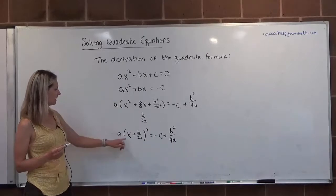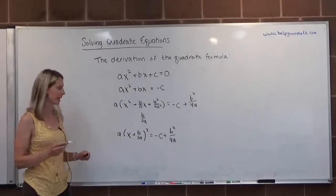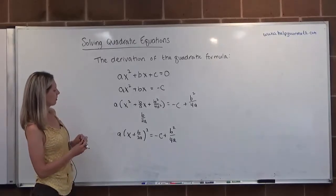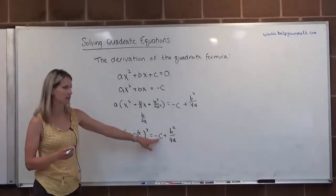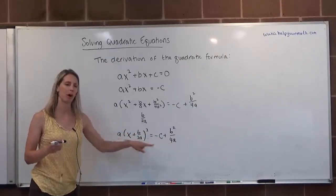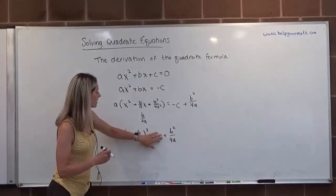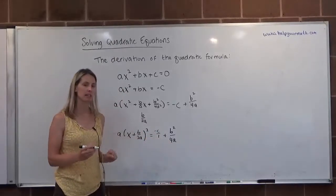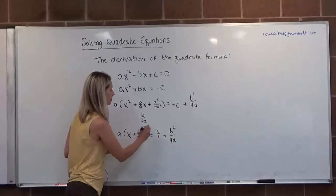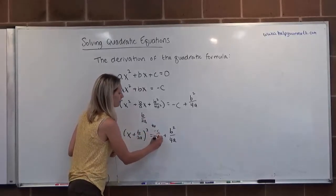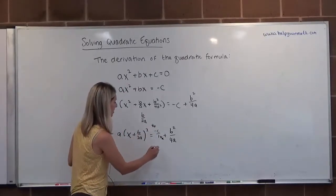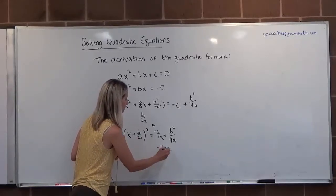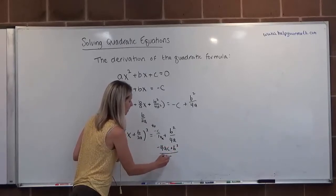Now I need to get the square by itself, so I'm going to divide both sides by a. What I should also probably do, what might make my life easier, is to just go ahead and combine these to be one fraction. So instead of negative c, I'm going to put negative c over 1. And then if I'm going to add these, I need a denominator that matches. So I need to multiply this by 4a and multiply this by 4a. So this would give me negative 4ac plus b squared over 4a.